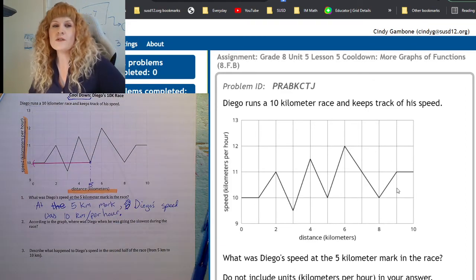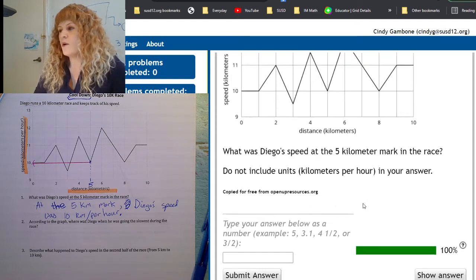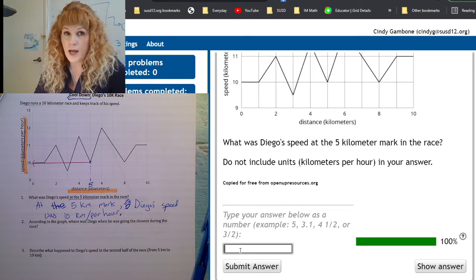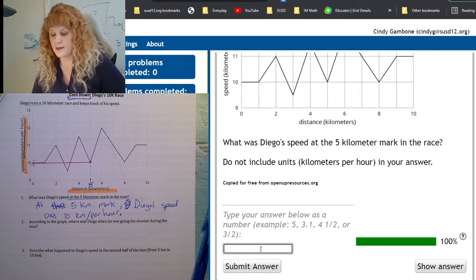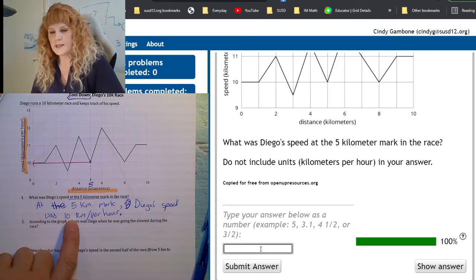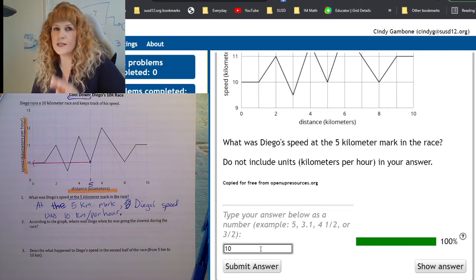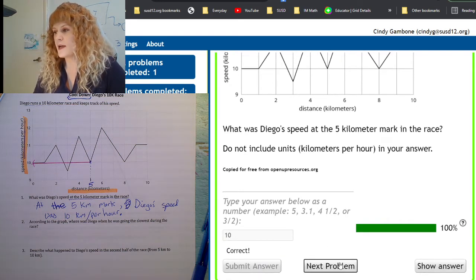Now, when you enter your answer online, it only wants the number because it's going to grade it right now. That's what this green bar means. If you enter the wrong answer, you're going to lose points, but you have to enter the correct answer in order to keep going. So, go ahead and enter 10 with no units. Don't write in 10 kilometers per hour, just 10. Correct. Next problem.